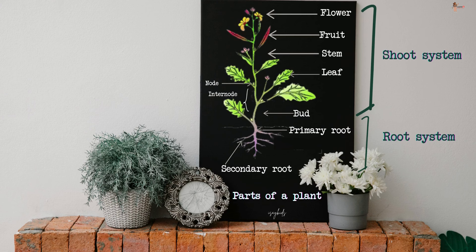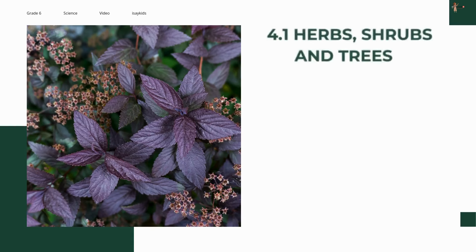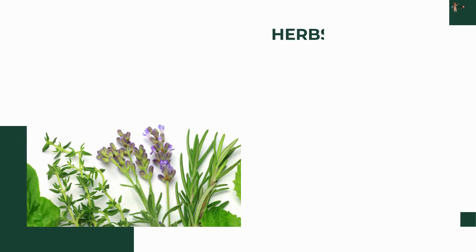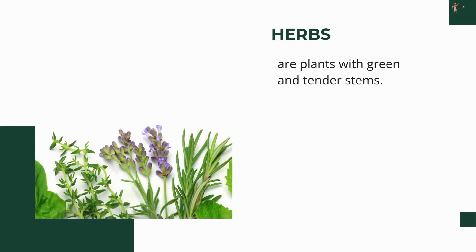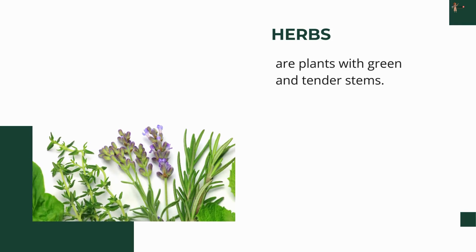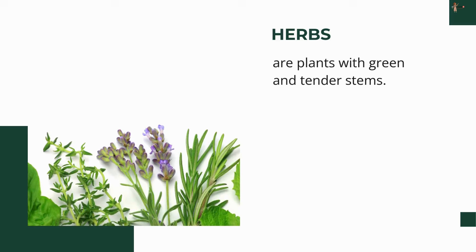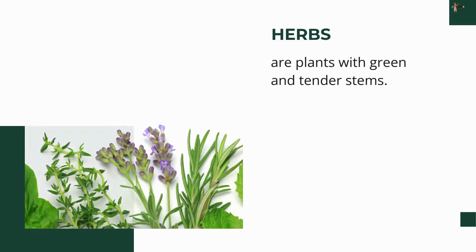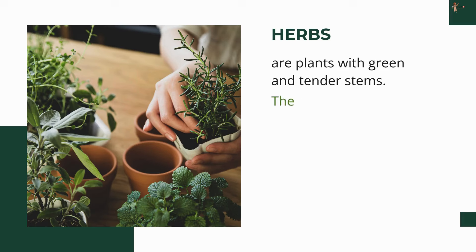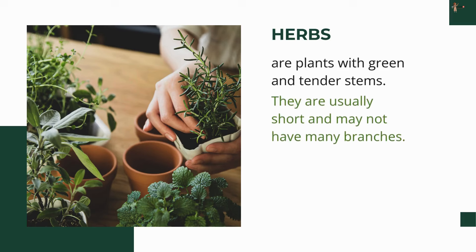Let's start with our first topic: herbs, shrubs, and trees. Let's first discuss herbs. Plants with green and tender stems are called herbs. They are usually short and may not have many branches.